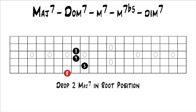The next chord we're going to go to is a dominant 7th chord. The one note we have to move to get to a dominant 7th chord is the major 7th — we move this down half a step. The only difference between a major 7th chord and a dominant 7th chord is that a major 7th has a major 7th interval, and a dominant 7th has a minor 7th interval. So if we move that 7th down half a step, this is our new shape.